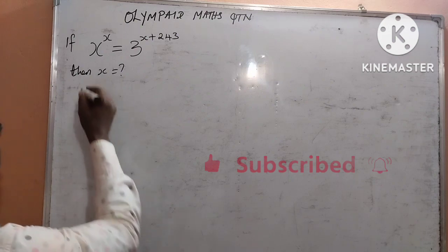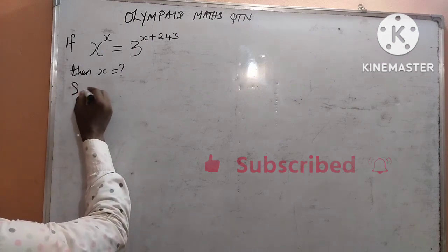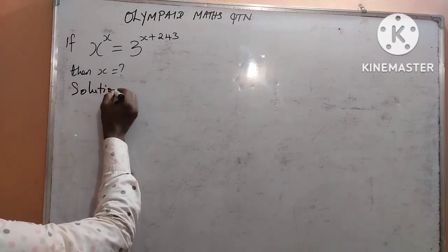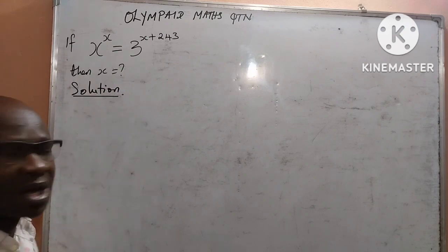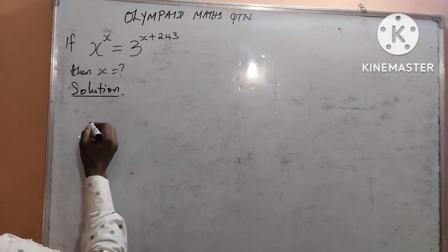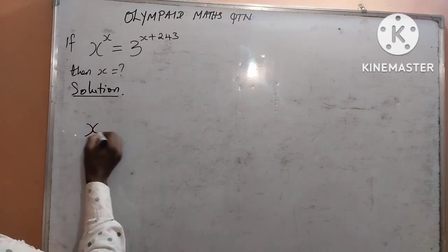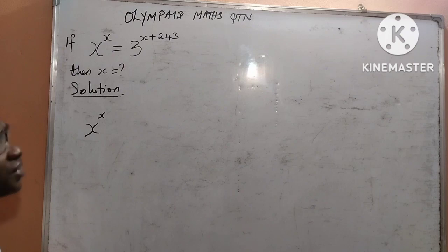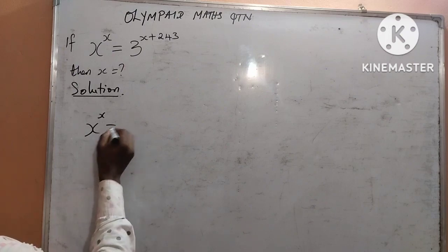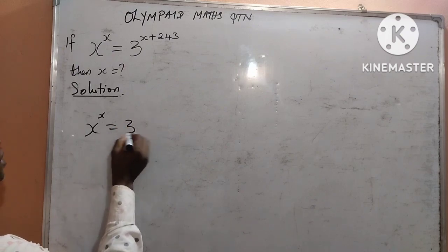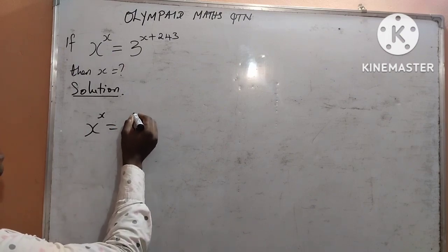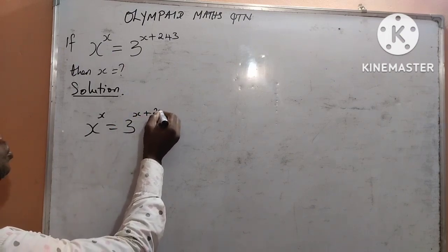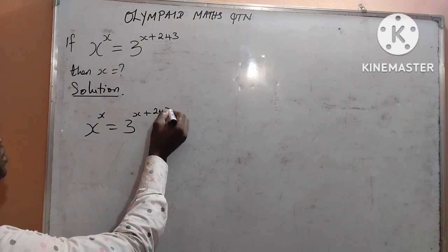From what we are given, we need to solve x raised to x equal to 3 raised to x plus 243.